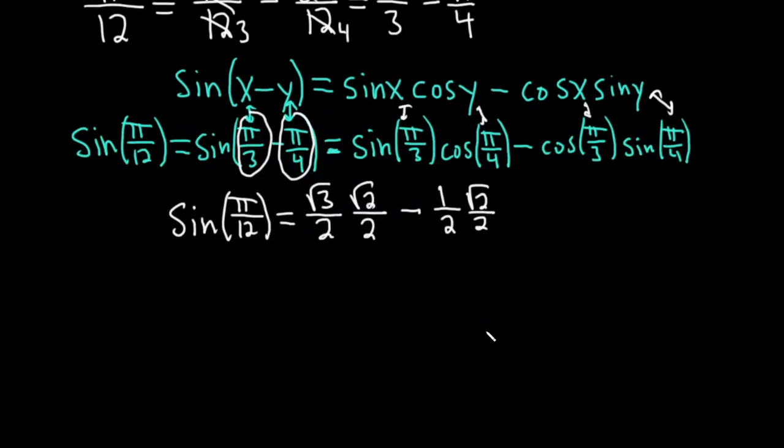We should keep going. We can multiply these square roots straight across. The square root of 3 times the square root of 2. So 3 times 2 is 6. We get the square root of 6 over 4. Minus 1 times the square root of 2 is the square root of 2. And then 2 times 2 is 4.